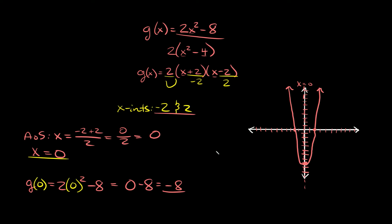For the domain and range: the domain is all real numbers. For the range, the lowest point on our parabola is at y equals negative 8, and then it heads toward positive infinity, so the range is all y values greater than or equal to negative 8.